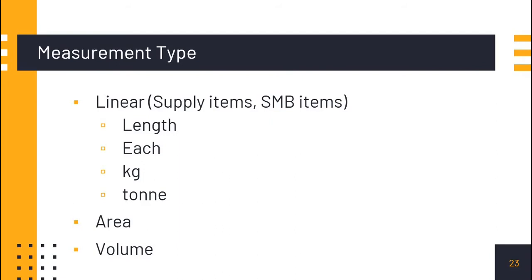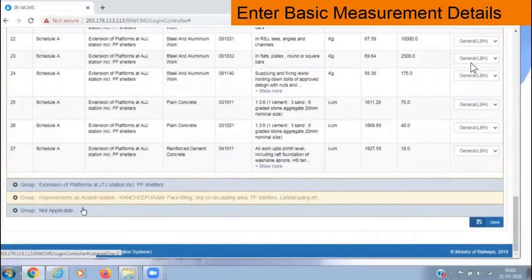For area measurements, only length and breadth will be there; volumetric measurements will be LBH. We have to select the measurement type for all items — say if there are 100 items in an agreement, we have to select for all 100. If we do not select, by default it will be general LBH. After selecting for all items, we click save.